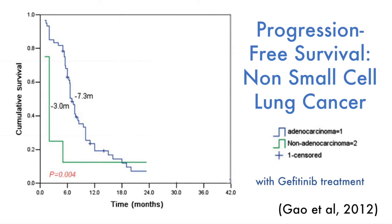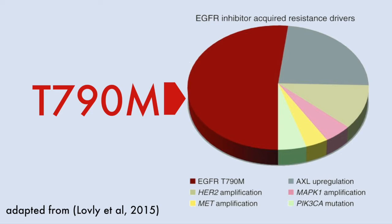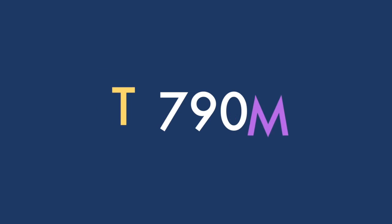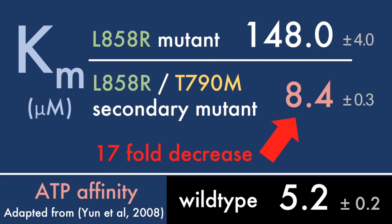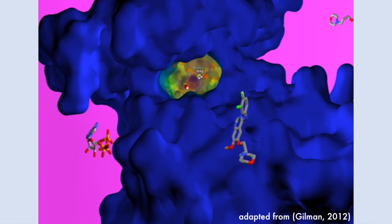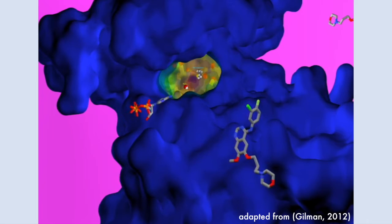Unfortunately, a majority of patients on gefitinib experience disease progression after this period. Sequencing of resistant tumors has revealed a number of common secondary mutations acquired as a consequence of treatment. The most common secondary mutation substitutes the threonine-790 residue with methionine. In a later paper, Youn and colleagues discovered this dramatically increases ATP affinity of the tyrosine kinase back to near-non-mutant levels, with KM decreasing from 148 to 8.4 micromolar. This allows ATP to outcompete gefitinib at cellular concentrations.